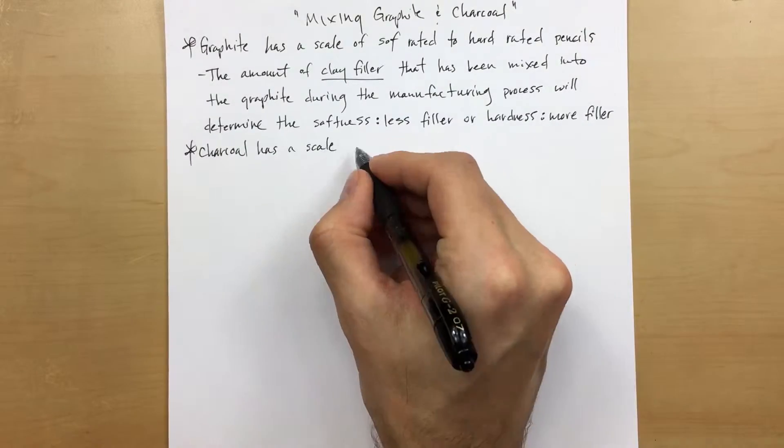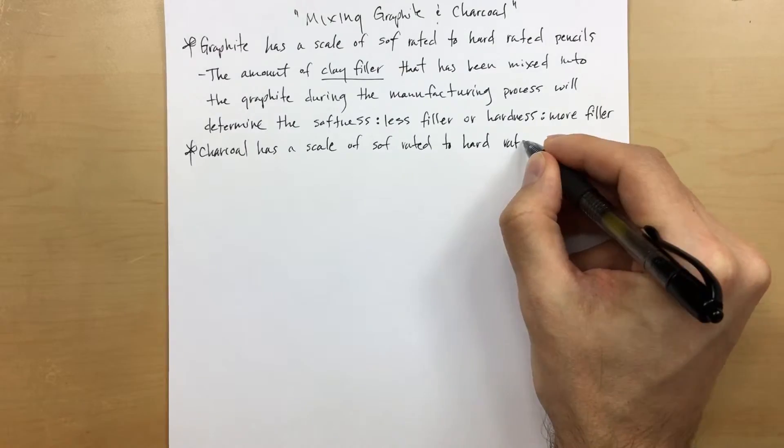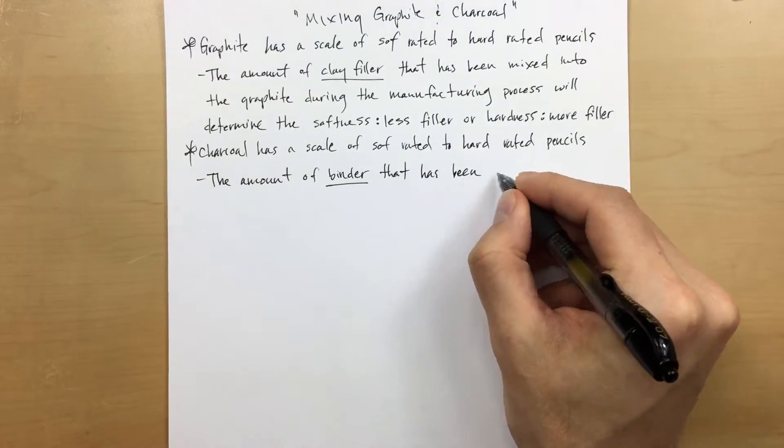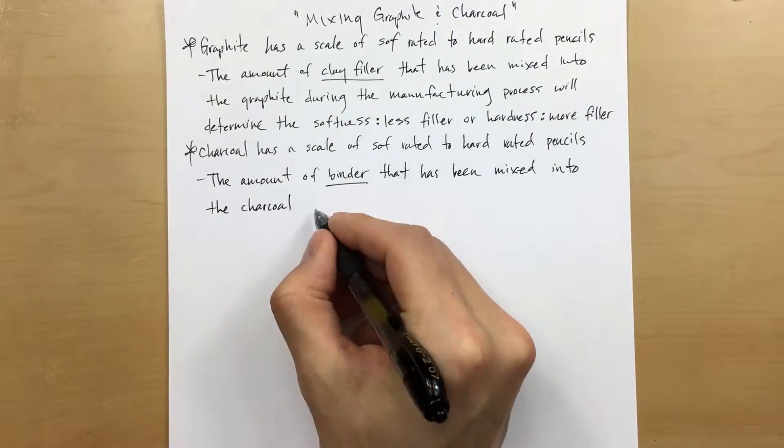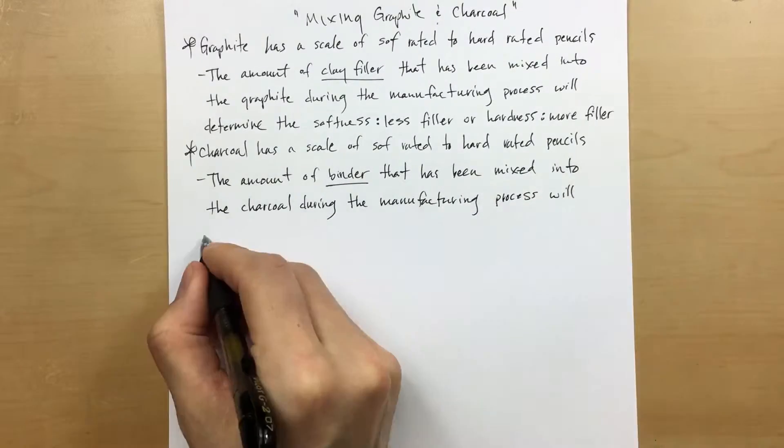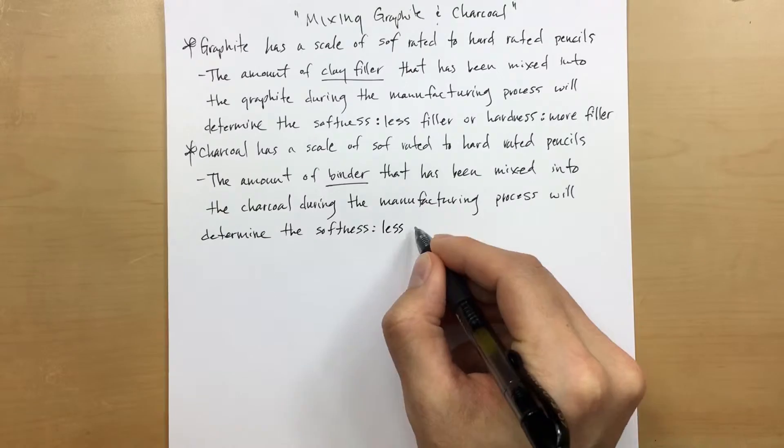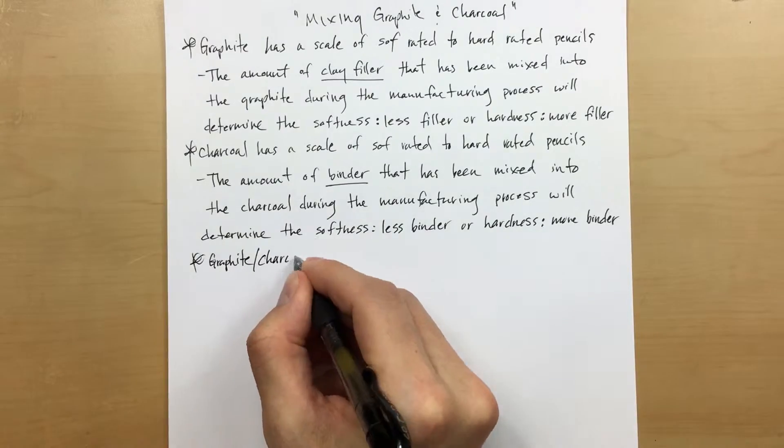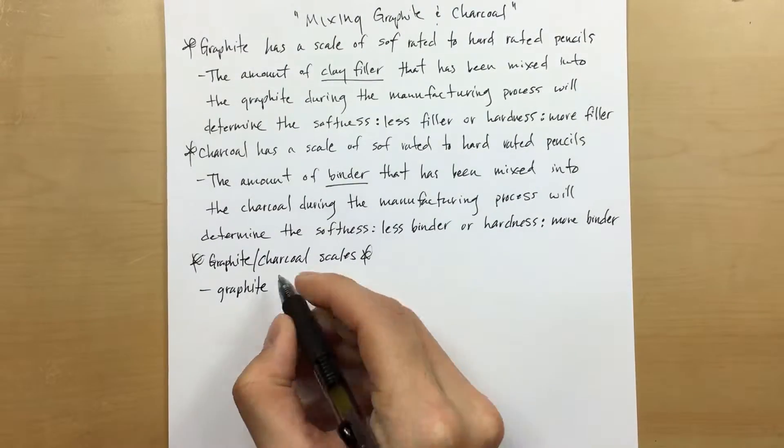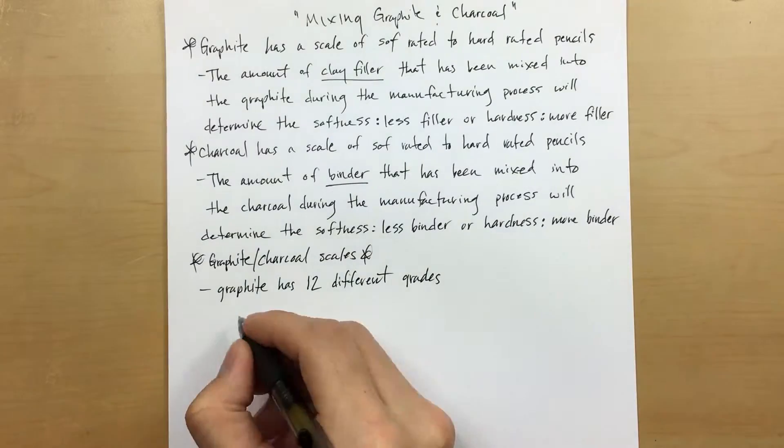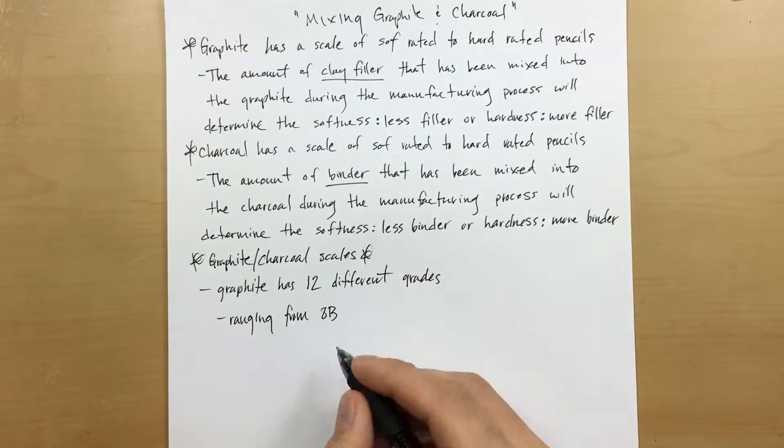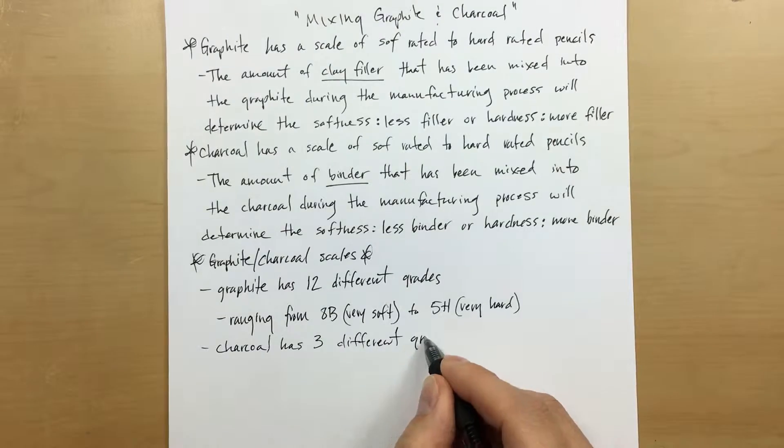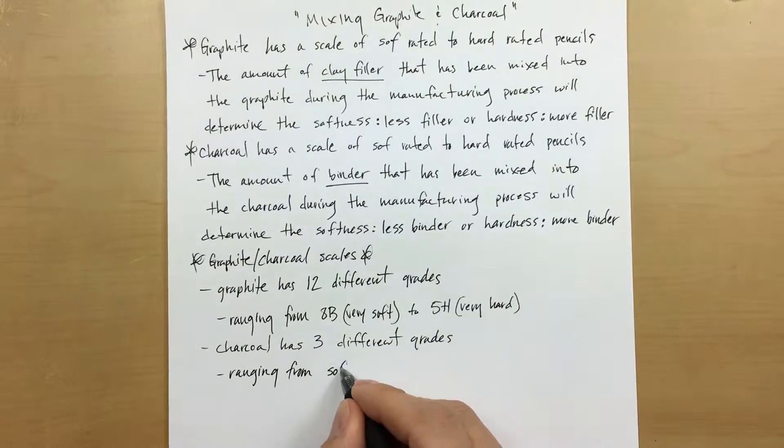Now the same is also true with charcoal. Charcoal has a scale of soft rated to hard rated pencils, and as with graphite, the amount of binder that has been mixed into the charcoal during the manufacturing process will determine the softness or hardness of the charcoal. It's the same thing: the less binder the softer, and the harder the charcoal the more binder. Now when it comes to the graphite and charcoal scales, it's important to note that graphite has 12 different grades. Those grades range from 8B which is very soft to 5H which is very hard. Charcoal has three different grades ranging from soft to medium to hard.